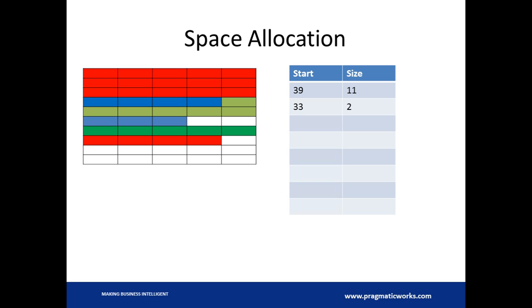As I write more stuff into that free space, I took the red file and extended it and it got extended at the end. I wrote a blue file in there and it wrote in two pieces. I wrote a green file — olive green — and that wrote in place, and I've got two spots on my free list: one very small and one a little bit larger.